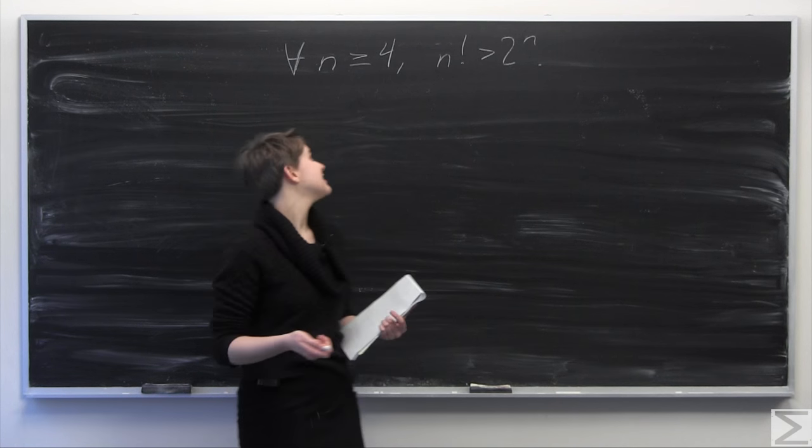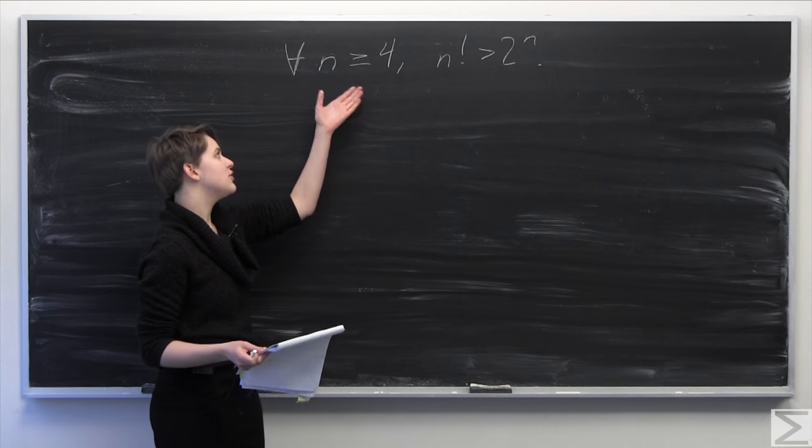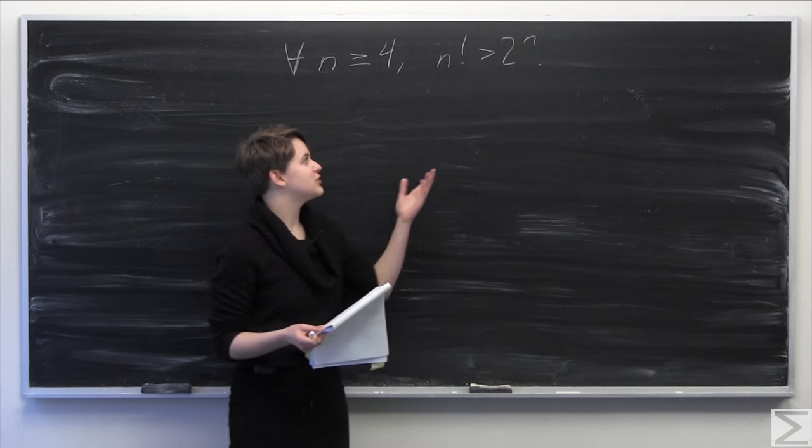So this week's problem of the week asks you to prove the following statement, that for all n, where n is some natural number, greater than or equal to 4, n factorial is greater than 2 to the n.